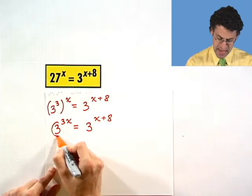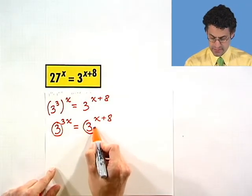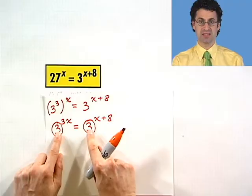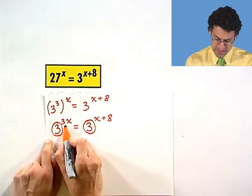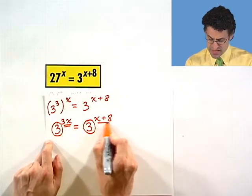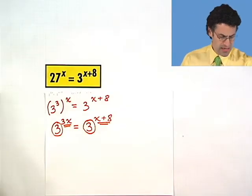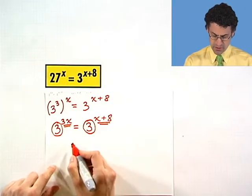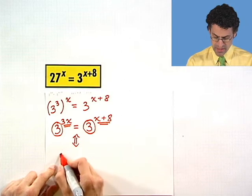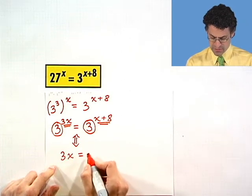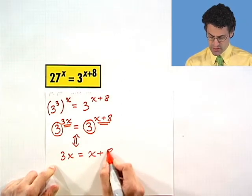But the great thing about this is, you see, now I've got the same base. If I have the same base on each side, then the only way these can be equal is if the exponents themselves are equal. That means that I immediately see that this automatically tells me that the exponent on the left has to equal the exponent on the right.